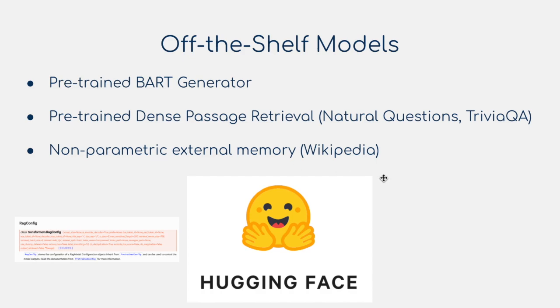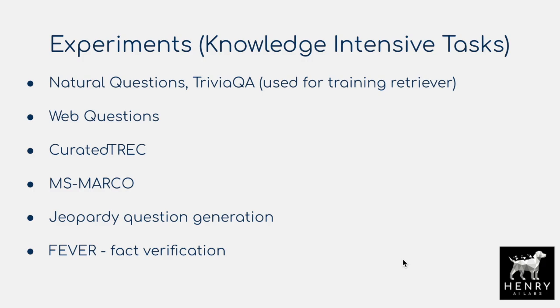These are some of the datasets that the authors test the retrieval augmented generation model on. These datasets are designed to be open-domain question answering — open-domain means the tasks require fetching some information in order to answer them, compared to closed-book question answering where the neural network should store all needed knowledge in its own parameters. These tasks are knowledge-intensive, and the authors have another paper benchmarking these kinds of datasets, including things like the FEVER fact verification dataset, or generating a Jeopardy question given only the answer.